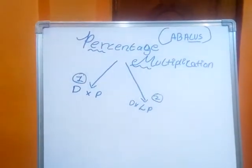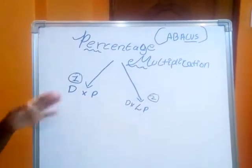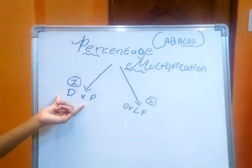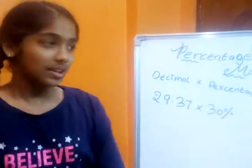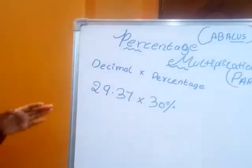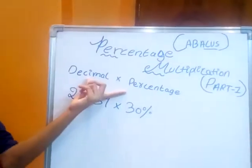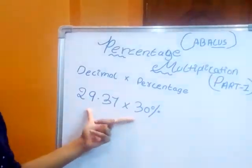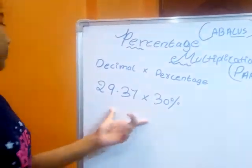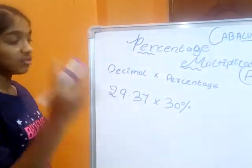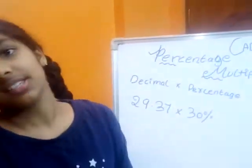I will explain what less percentage means later. First we will see part 1. Now, here in part 1 we will discuss about decimal into percentage. This is the number: 29.37 into 30%.